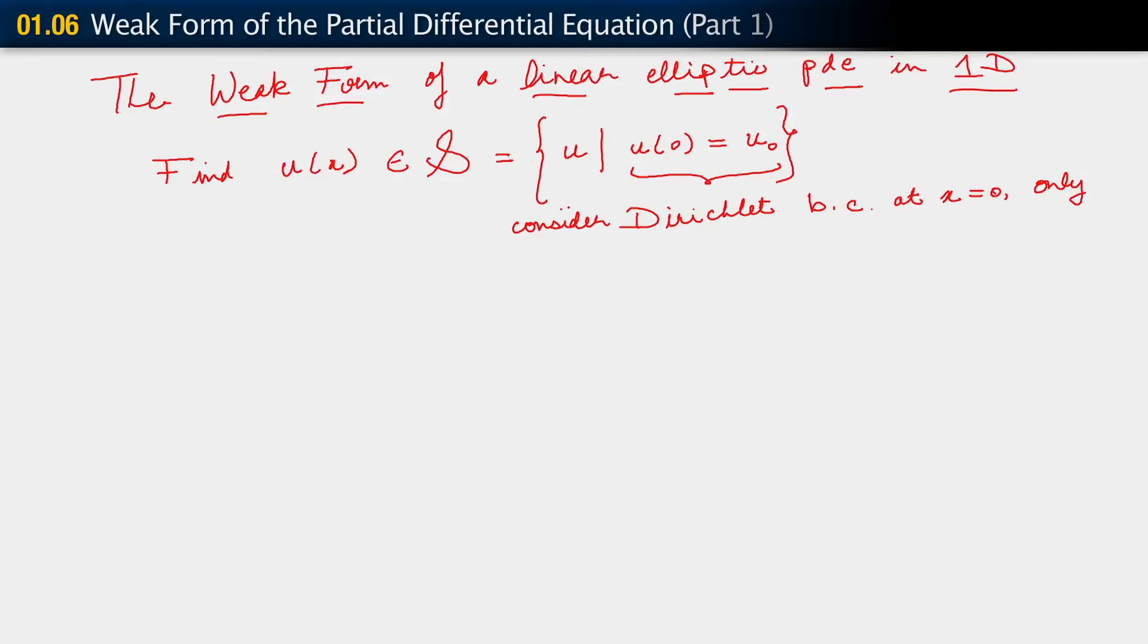So, this is what we want to do. We want to find u belonging to this particular space, s, which for now is completely general. All we're saying is that it needs to satisfy the Dirichlet boundary conditions.